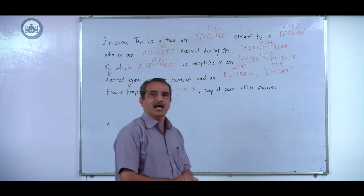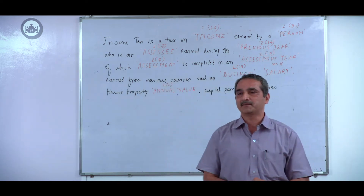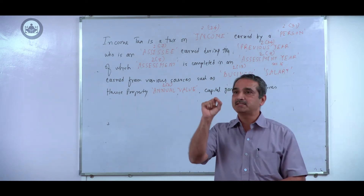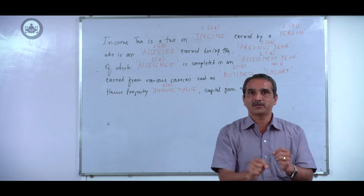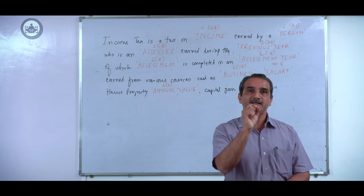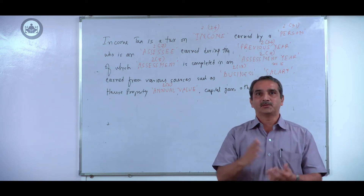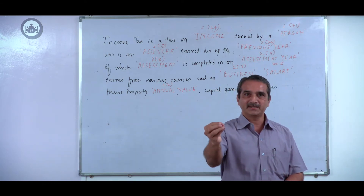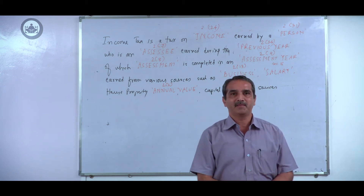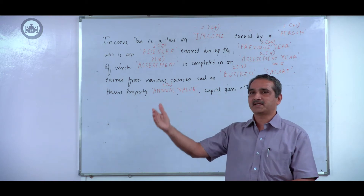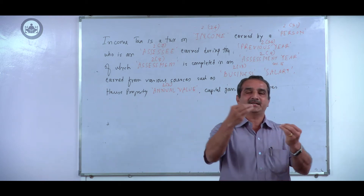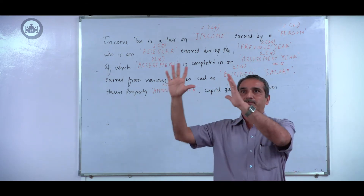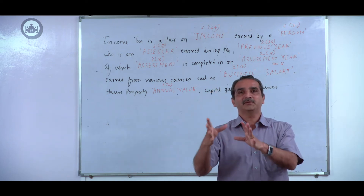The normal meaning of the term income is any amount received with some regularity from a definite source. Salary is the most clear example — there is a definite source, an employment, and an employer who pays the salary. Similarly, rent from a tenant paid monthly is definitely income. You need not incorporate that in the definition because it is already the normally understood meaning.